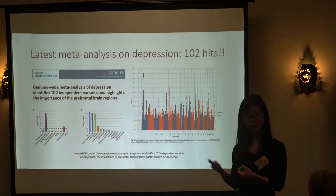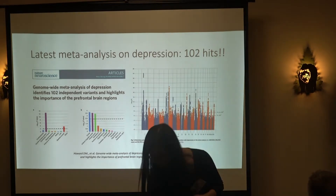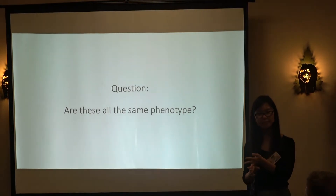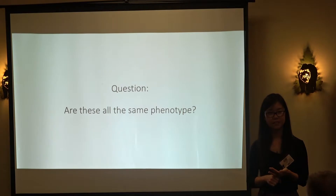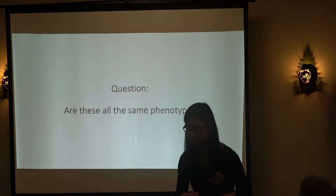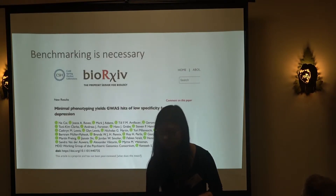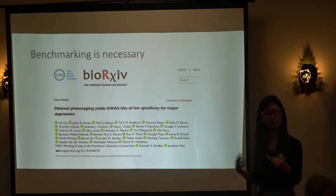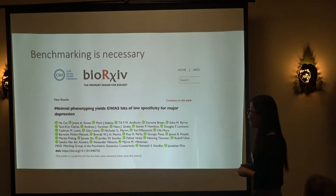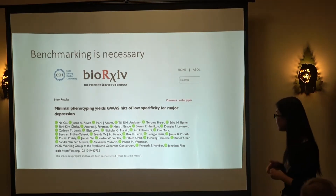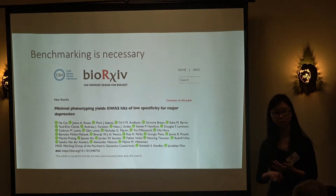By this time I was following Twitter the whole time watching them publish papers. But the real question is: are these all the same phenotype? Do they have the same prevalence in the population and the same genetic architecture? Just looking at prevalence, they don't — they are much higher than the known 15% for depression. Lots of people talk about benchmarking for bioinformatics and computational tools — I would say that benchmarking is equally necessary for phenotyping.